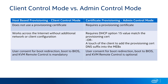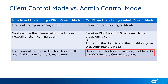With certificate provisioning, or admin control mode, you have to obtain a provisioning certificate before you can use this mode. That certificate is used to help authenticate that the system is being activated by an authorized party. The benefit is that user consent becomes optional — you can turn it on and off as needed. So if you want to work on a system where a person is not present and don't want to wait for them to come back, you have the option of turning off that user consent requirement remotely, or leaving it off entirely.